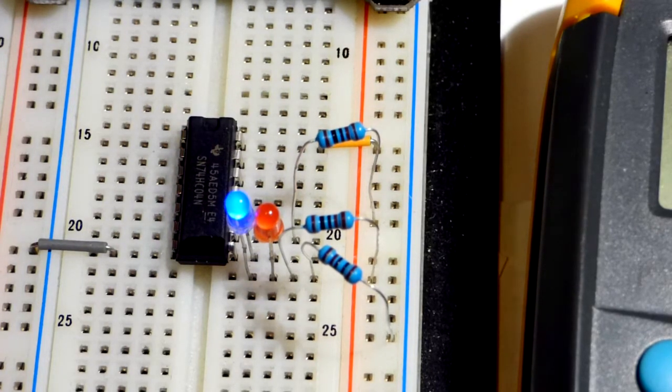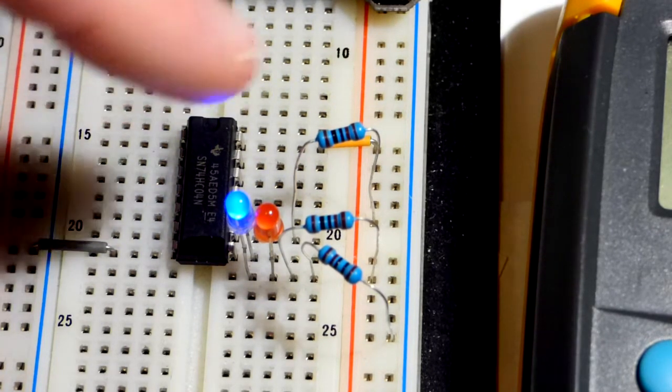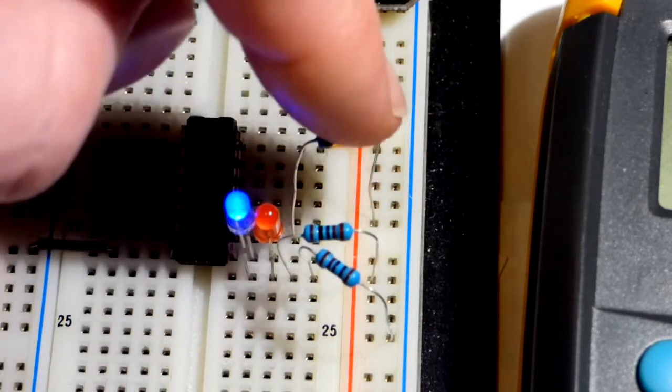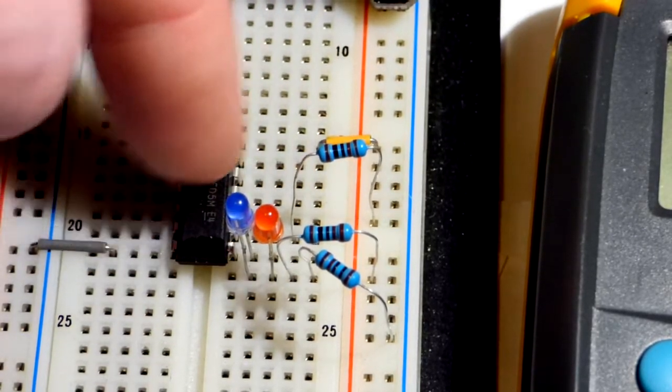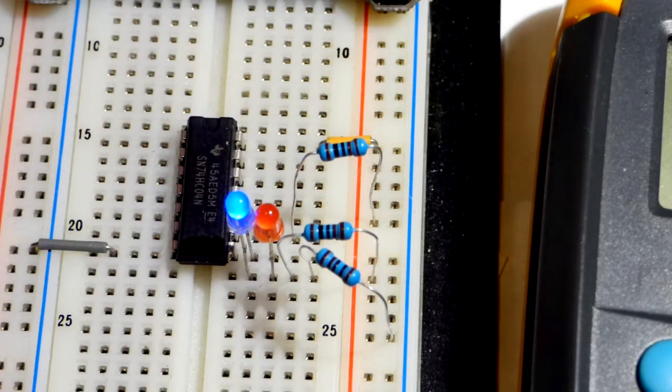Now I'm going to turn the power on, the breadboard power supply. We stuck this resistor up here to the positive rail. We have basically 5 volts at the input there.